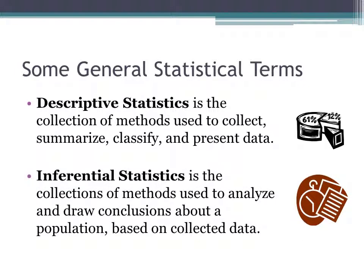The other branch of statistics is called Inferential Statistics. Inferential Statistics is the collection of methods used to analyze and draw conclusions about the population based on collected data. This branch goes beyond collecting and presenting data.